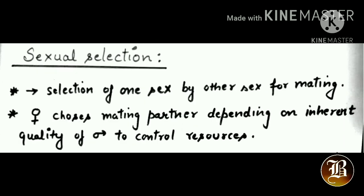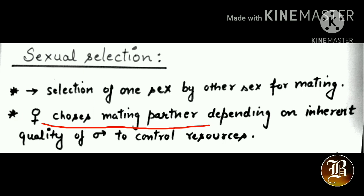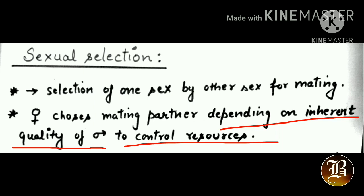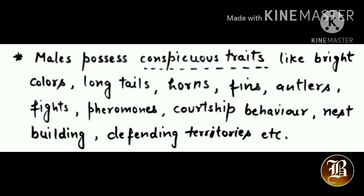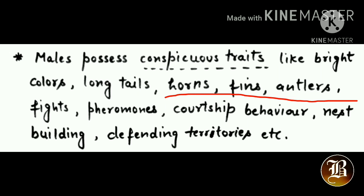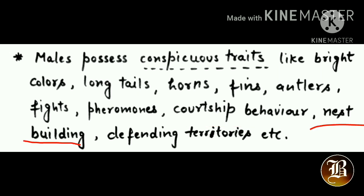The last type is sexual selection. Here one sex is selected by the other for the mating process. Generally the female is the choosier one — she selects the mating partner depending on the inherent quality of the male, particularly his ability to control resources. Better resource control by a male attracts the female. Males typically display conspicuous traits: special, easily visible characters like bright colors, long tails, horns, fins, antlers, ability to fight, pheromones, good courtship behavior, ability for nest building, and ability to defend territory. All these characters help males attract females.